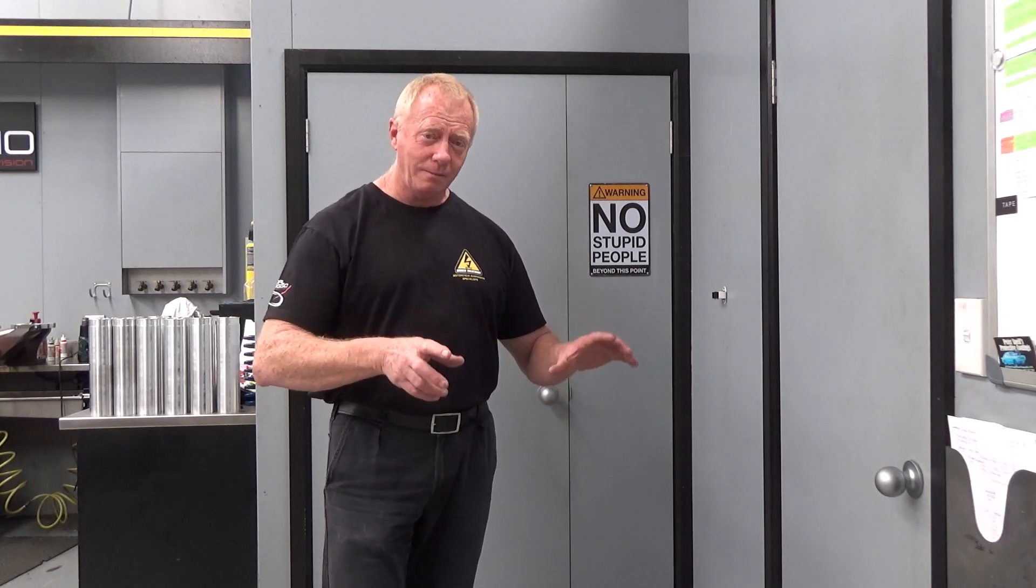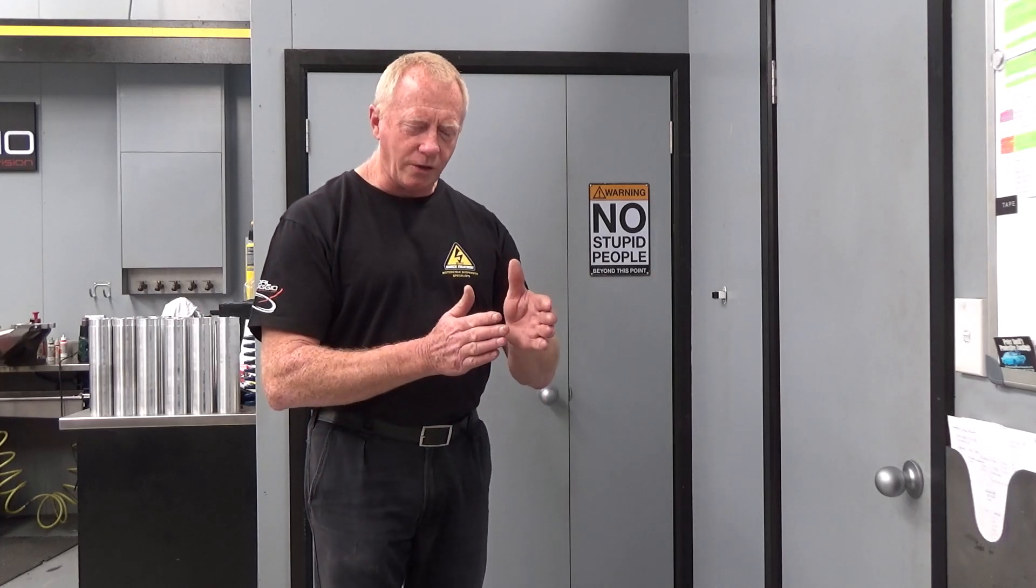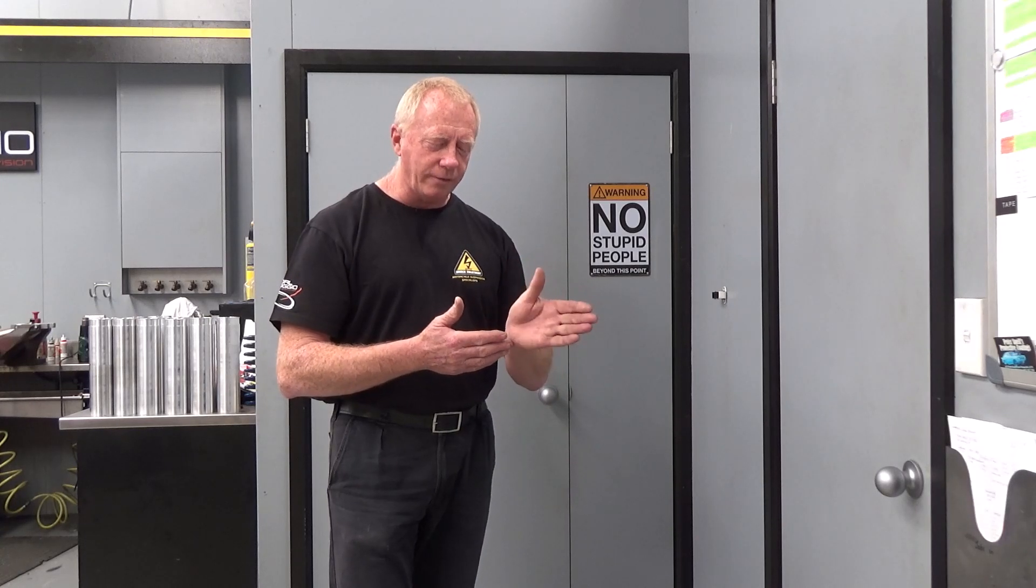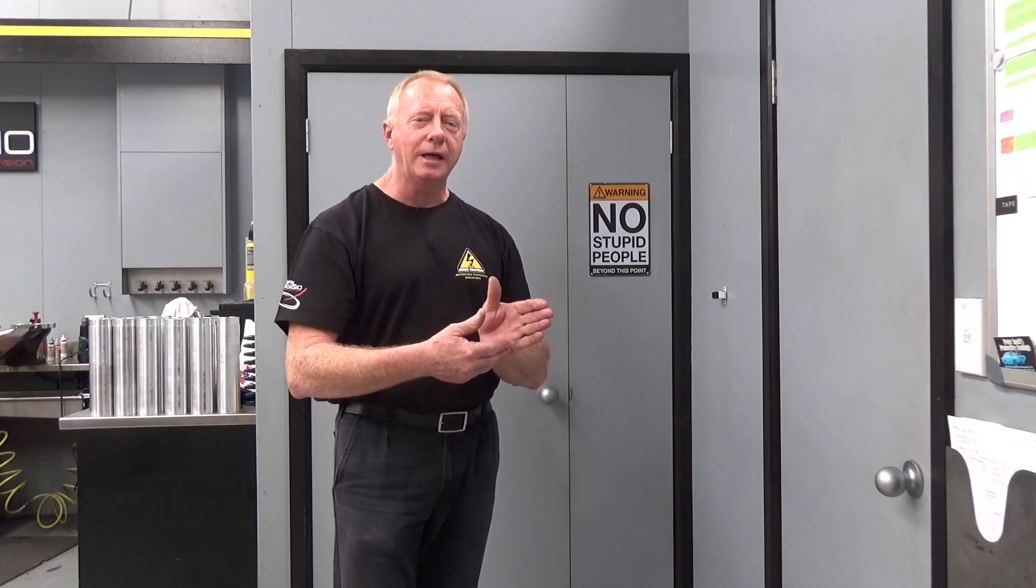So as we turn the bars, steering, our force is being generated because the actual tyre is now moving off the centre line. And as that tyre moves away from the centre line, we're getting a horizontal torque being generated against the side of the tyre. And it's that torque that actually makes the bike go around the corner.